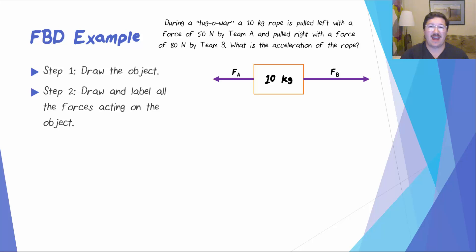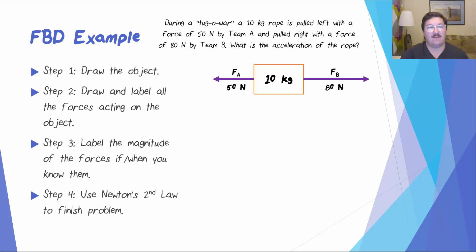These forces will always be labeled F, but they will have different subscripts. Sometimes they have specific subscripts that we will always use. Other times, you can make up your own. In this case, A and B. Step three is to label the magnitude of the forces if and when we know them. In this case, we know what both forces are from the very beginning, 50 newtons and 80 newtons. Other times, you'll calculate one of these forces as some future step of a problem, and when you do, you should add that magnitude to your diagram. And finally, we should use Newton's second law to finish the problem.